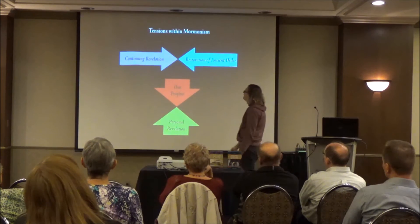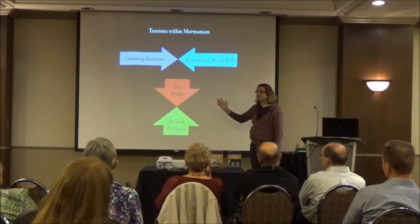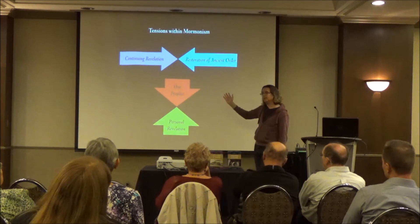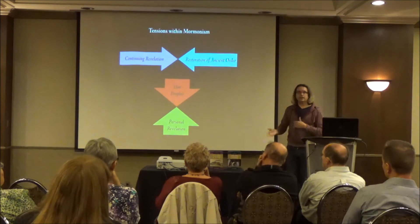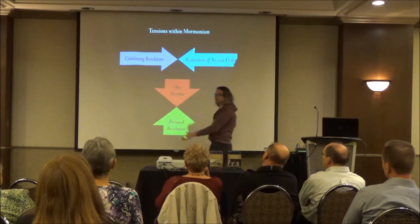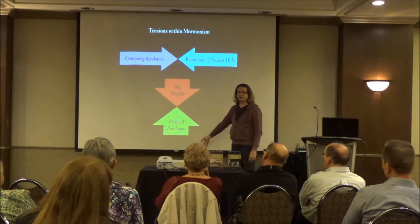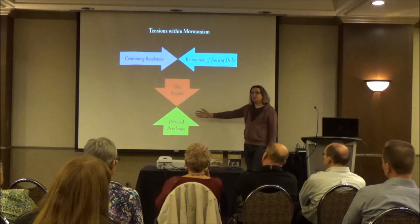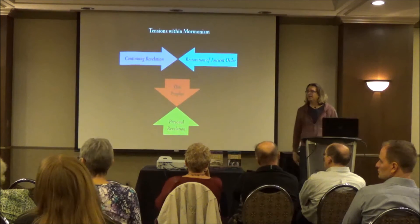There are tensions involved in the early movement. On one hand, there's continuing revelation — a prophet who keeps restoring things. But the idea was also that it's a restoration of an ancient order of things, as it was supposed to be in the primitive church. If you restore it one way and then five years later restore it a different way, which one is the ancient order? Another tension: everybody in this movement is accessing personal revelation, and yet there's also one prophet. Will the church be governed by common consent of all members, or will the prophet dictate?